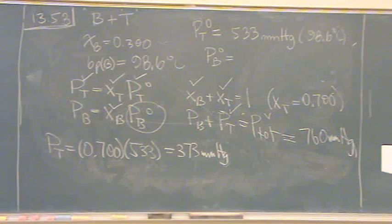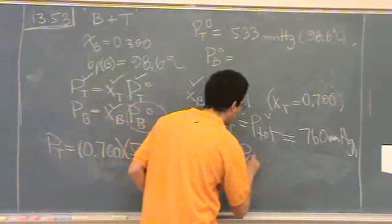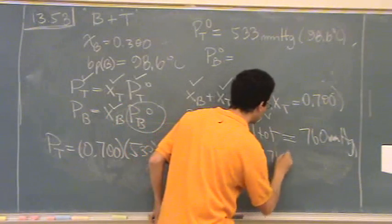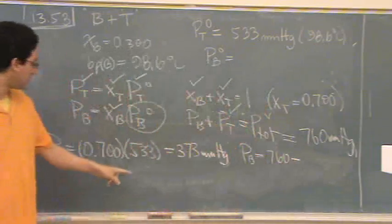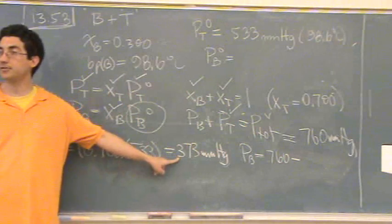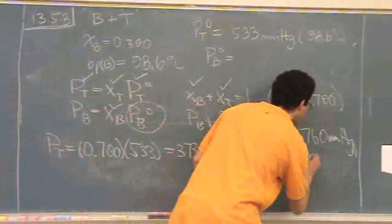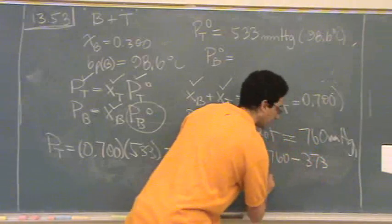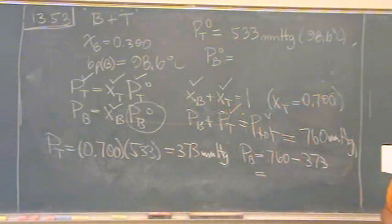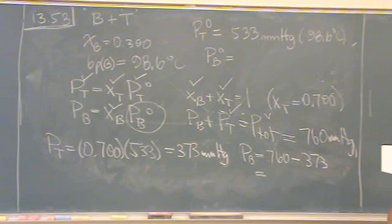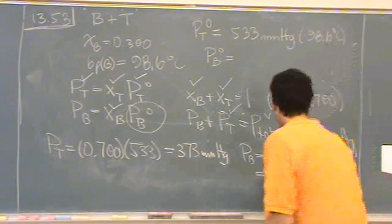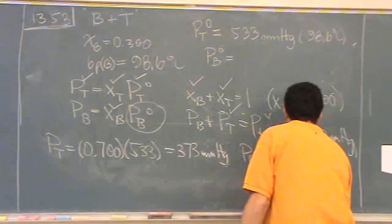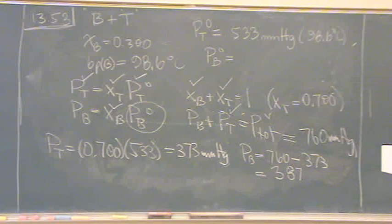Now I can solve for Pb. Pb is just 760 minus what I just found, Pt, 373. Let's see, I calculated that to be 387. And that's millimeters of mercury.